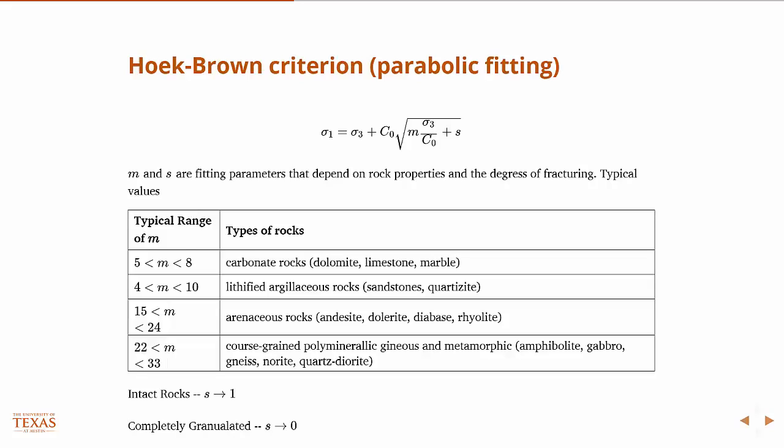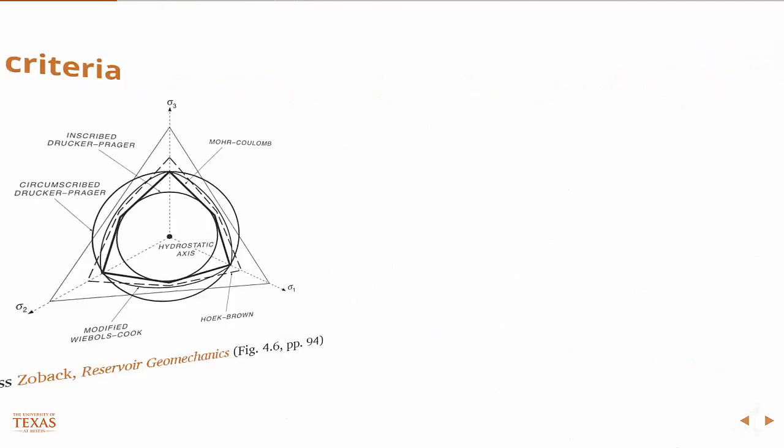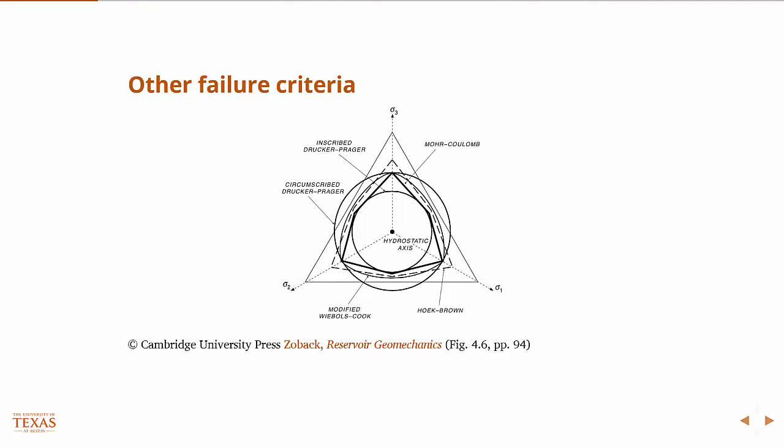So the Hoek-Brown criterion, again, like if we go back to this figure, it still is mostly hexagonal.